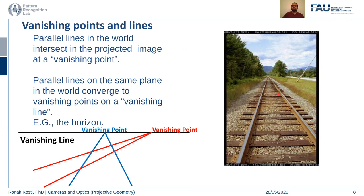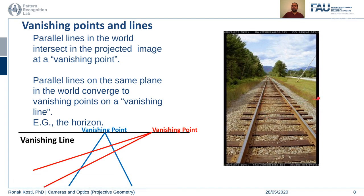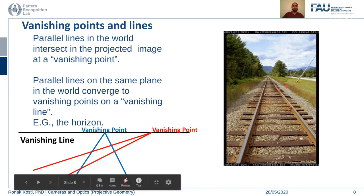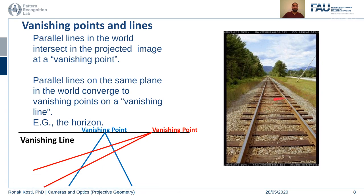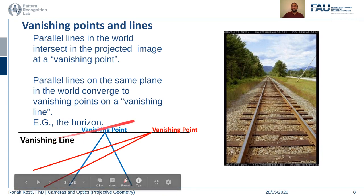We have already done the discussion about vanishing points and lines. All parallel lines lying on the same plane in the real world converge to a common vanishing point. For example, the top and bottom edges of grass are actually parallel and both meet at infinity. Similarly, rail tracks meet at the same vanishing point. A line connecting all vanishing points is the vanishing line — for example, the horizon.